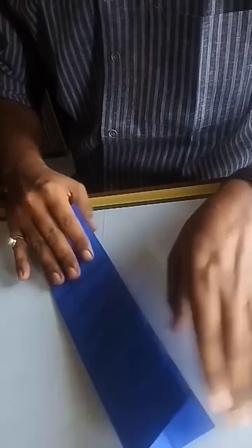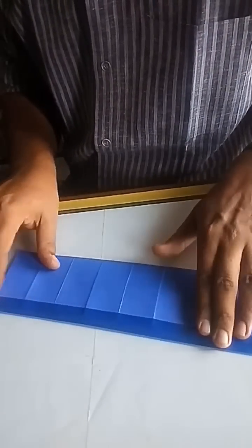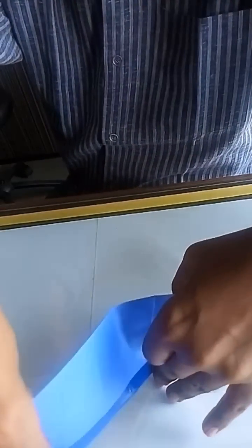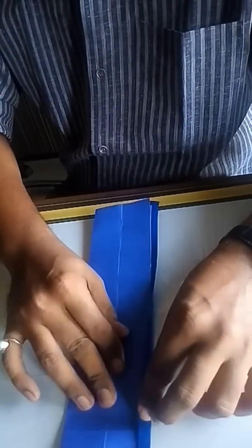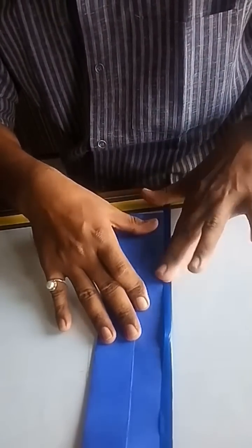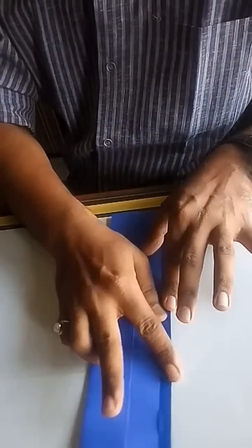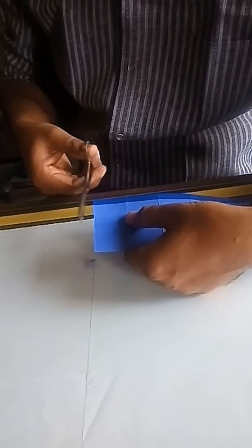Now fold the sheet from the half along its length and stick both the open edges by applying tape as shown. Cut the extra tape.